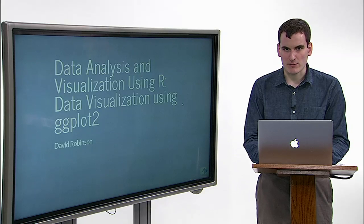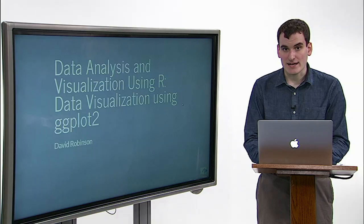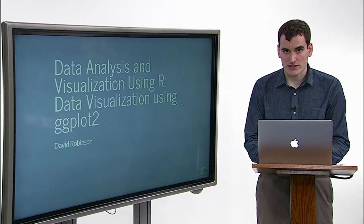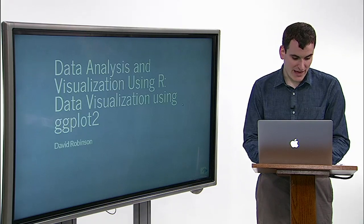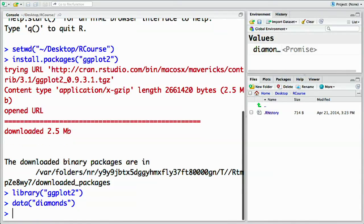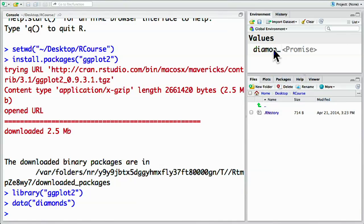ggplot2 comes with data available to use as a demonstration, particularly the diamonds dataset containing information about several attributes of 54,000 diamonds. We can access it using the data function — so here that's data('diamonds') — and we can see that we've added diamonds to our global environment.